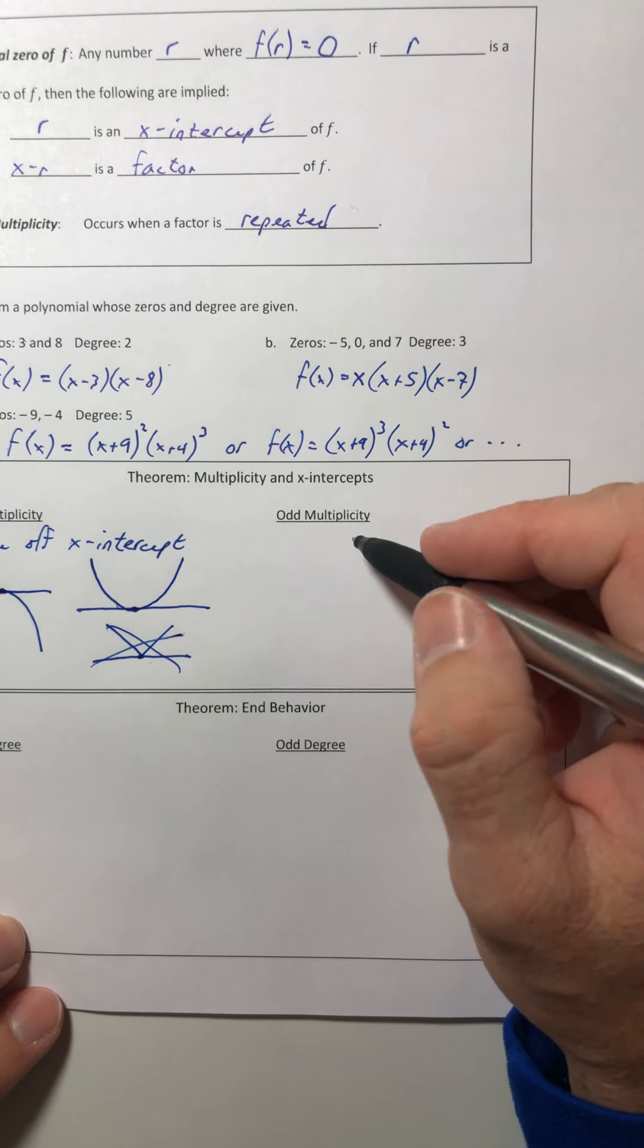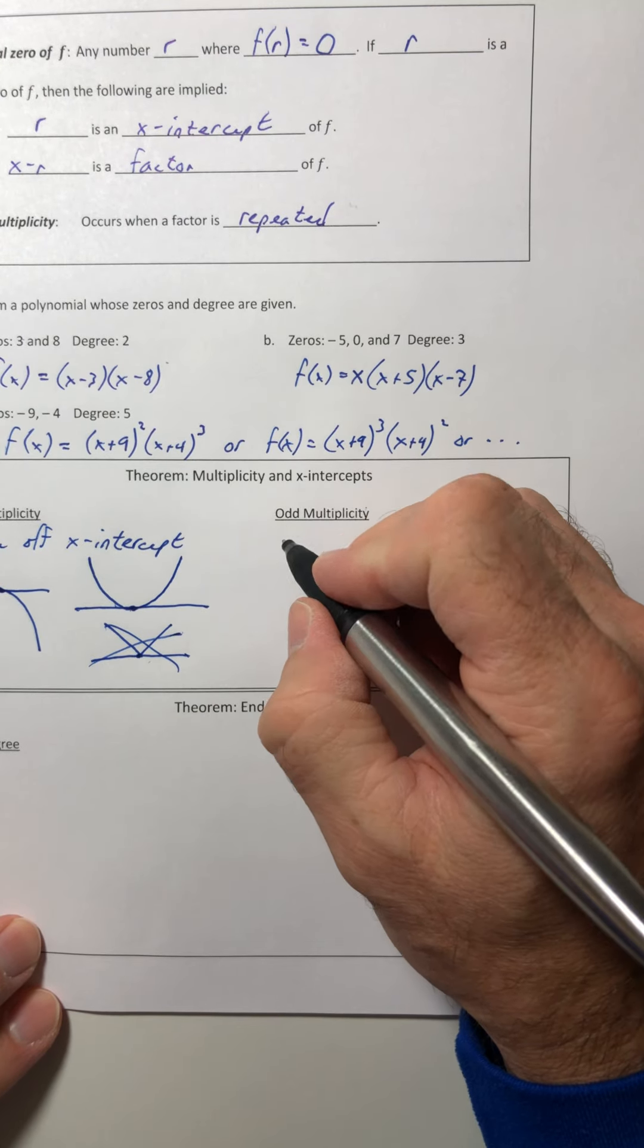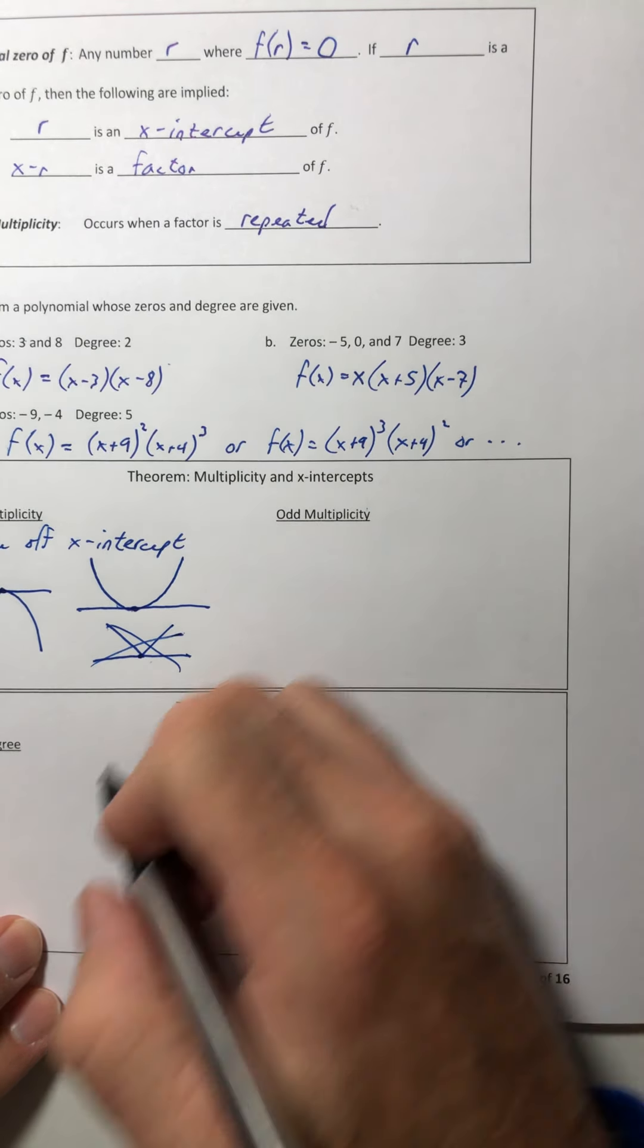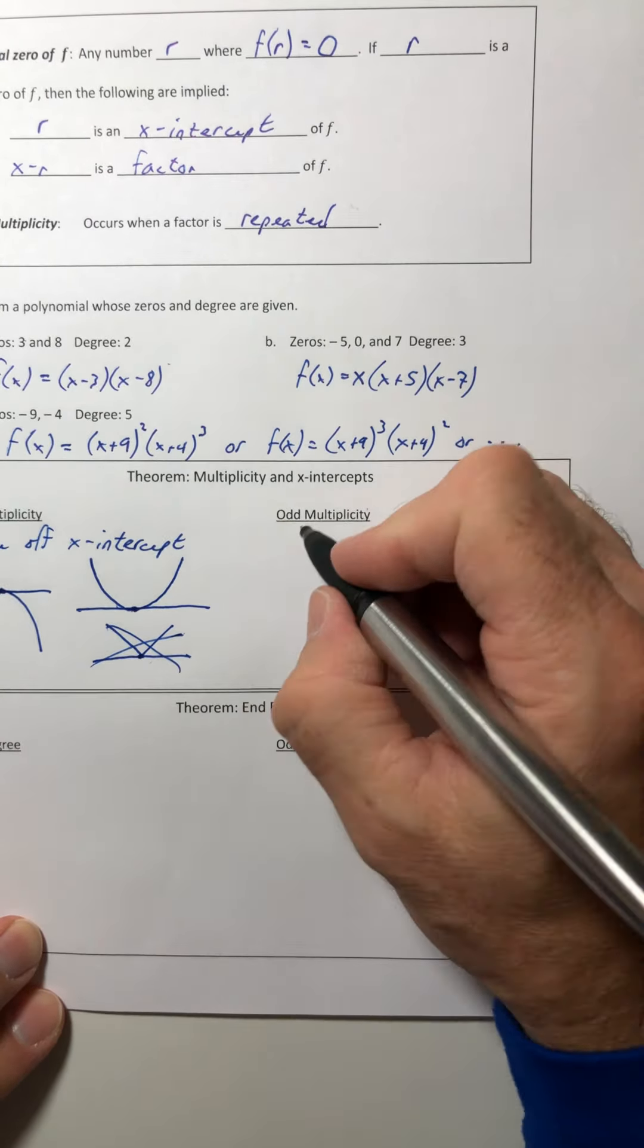Okay. So now the question is, well, what do you do if it's odd? So if it's odd, it's not going to go like straight on through it. It's not going to bounce. It's going to slide.